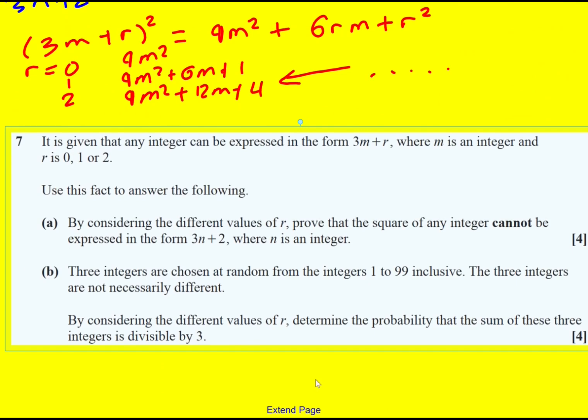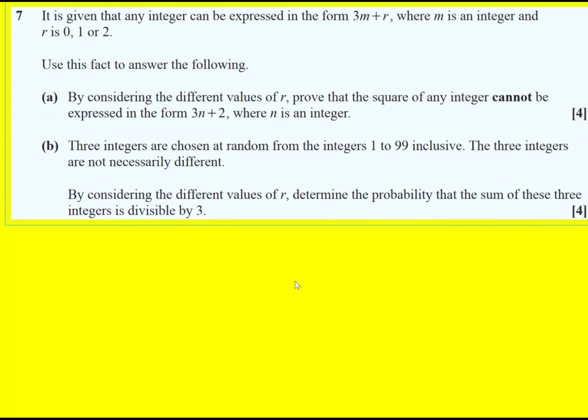Moving on, let's look at part b. We're told that three integers are chosen at random, from 1 to 99, and they're not necessarily different. Okay, can be repeated. By considering the different values of r, determine the probability that the sum of these three integers is divisible by 3. So it's 1 to 99, and therefore we're going to get 33 of each type. 3m, 3m plus 1, and 3m plus 2.